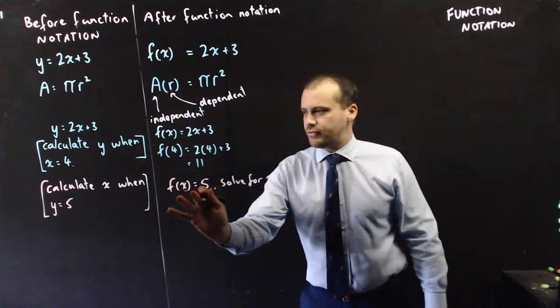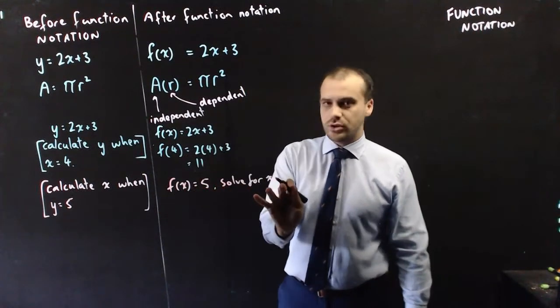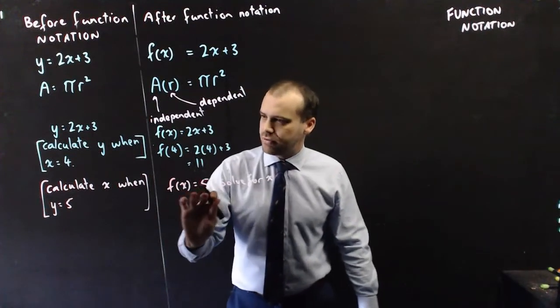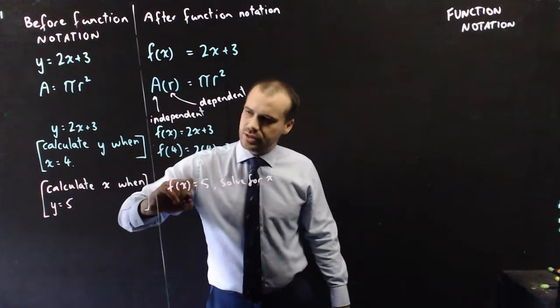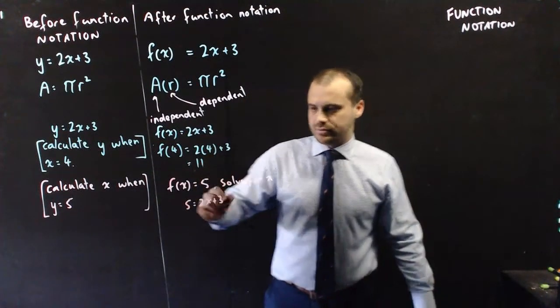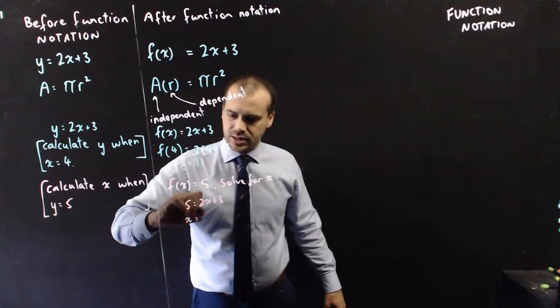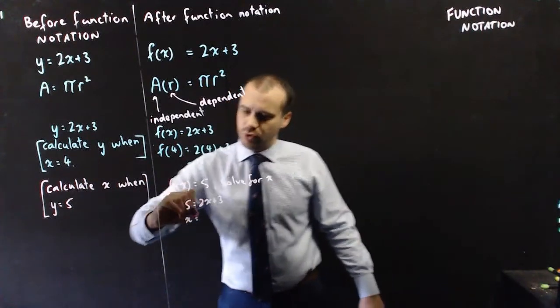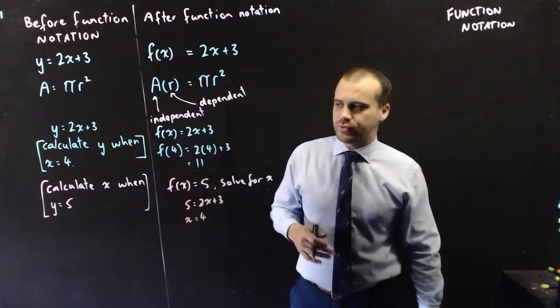So if f of x equals 5 and we want to solve that for x, we just sub in 5 for f of x. 5 equals 2x plus 3, and then you solve that. x is equal to 4.